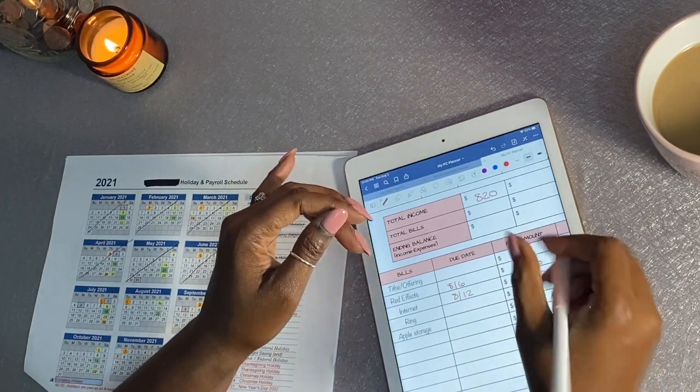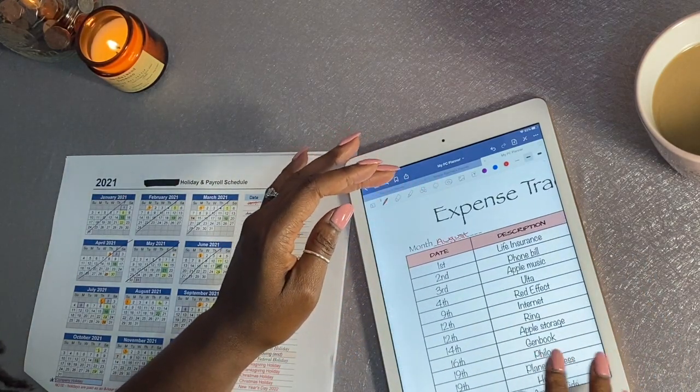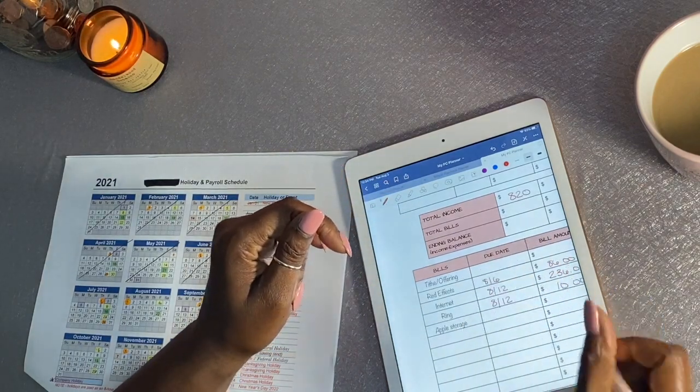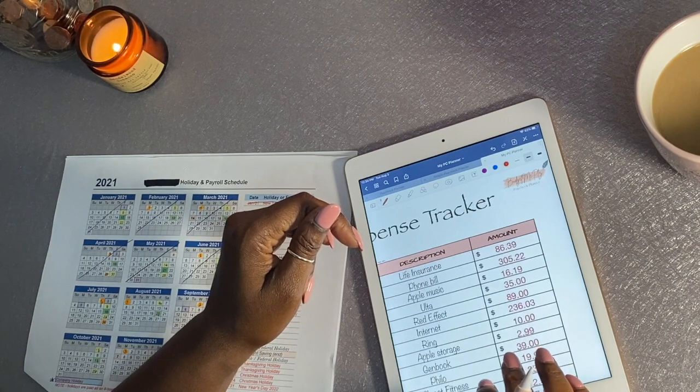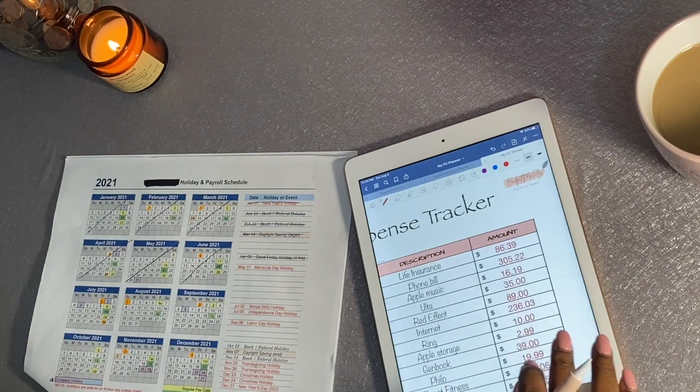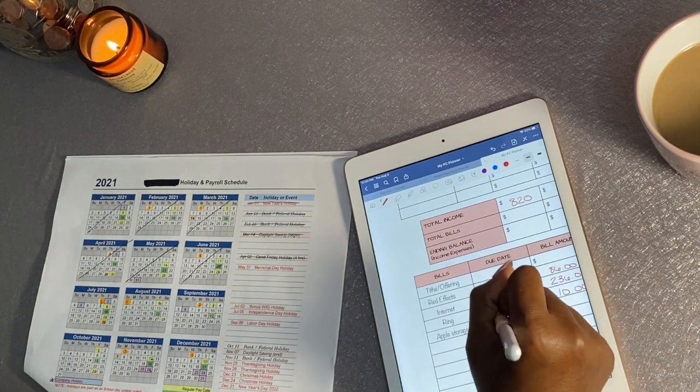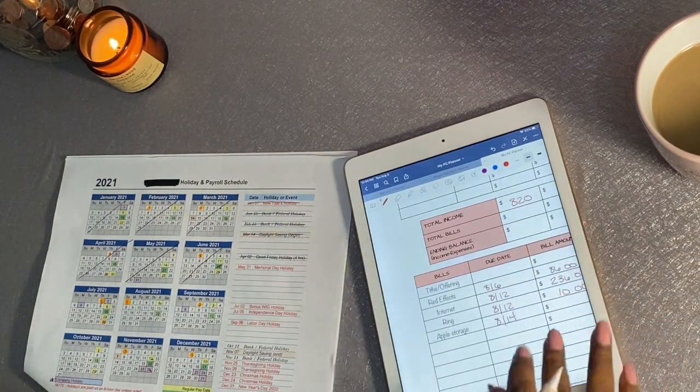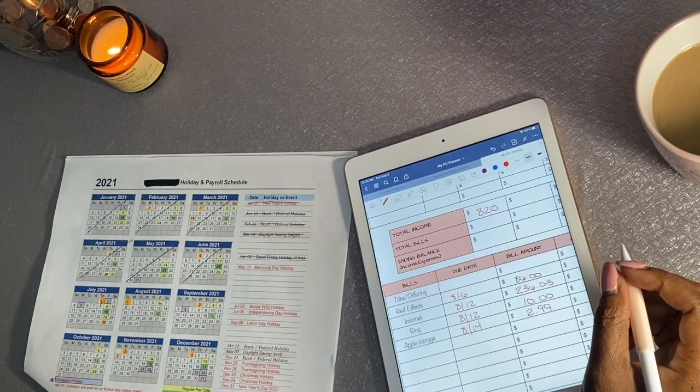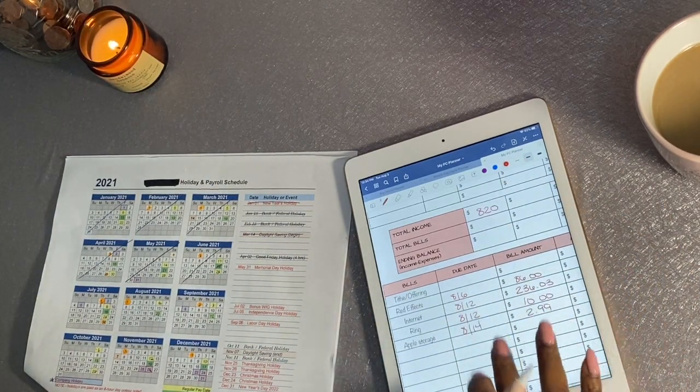Then we have our Ring, I already know that's $10, and that is due on the 12th as well. And then Apple storage, which I'm not sure if I'm going to even have this bill on the 14th because I recently upgraded my storage to two terabytes. This $2.99 may or may not be taken out because I upgraded my storage and I think I'm going to have a new due date. But that's all the bills we have for this paycheck.